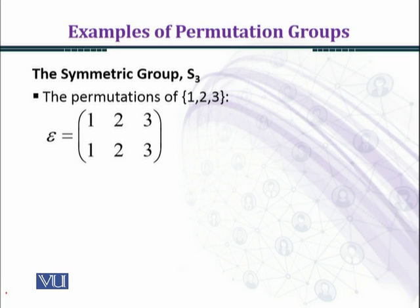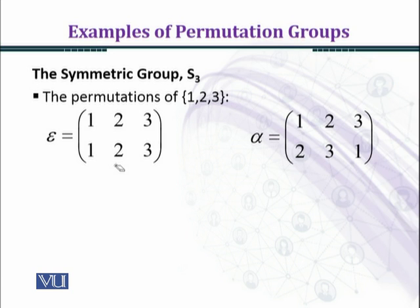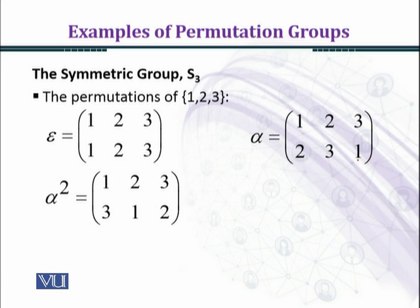Now we can rotate — starting with 1, 2, 3 in the top row, we shift to get 2, 3, 1 in the lower row. This gives us the permutation alpha: 1→2, 2→3, 3→1. Then rotating again in cyclic order gives 3, 1, 2, which is alpha squared.